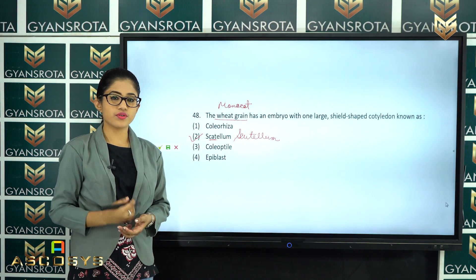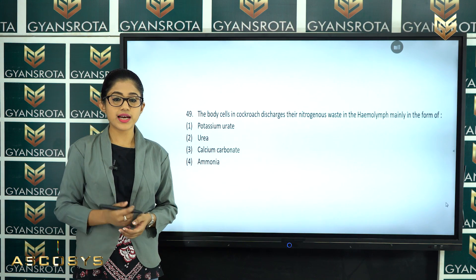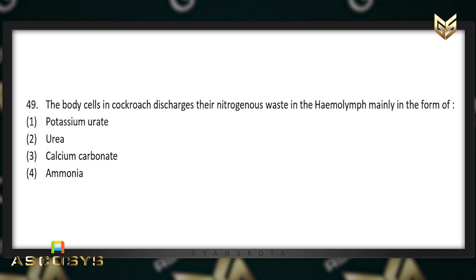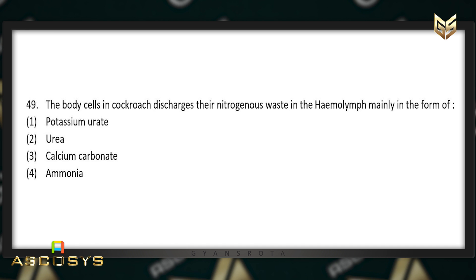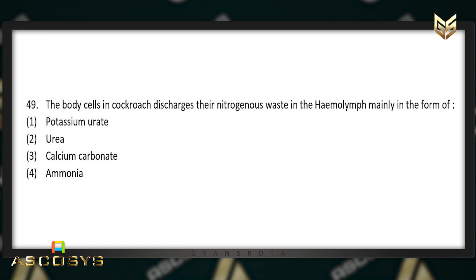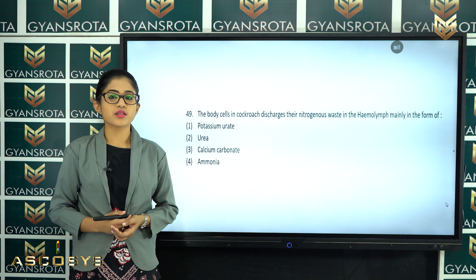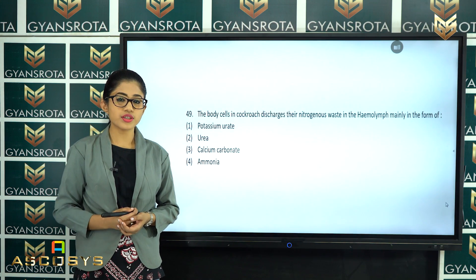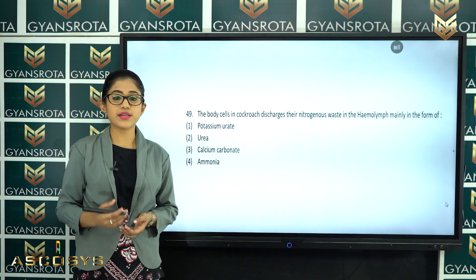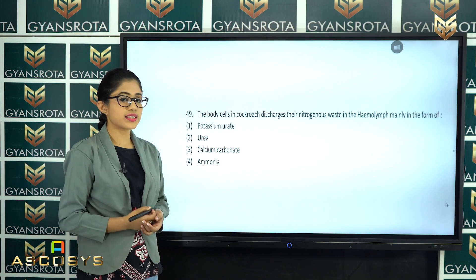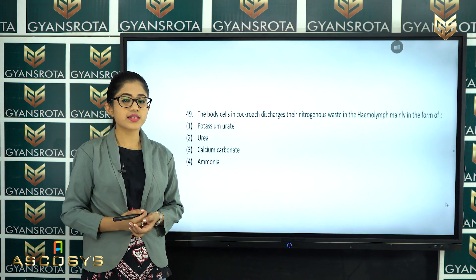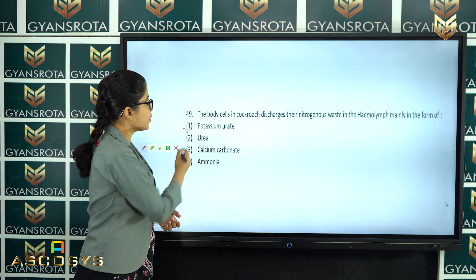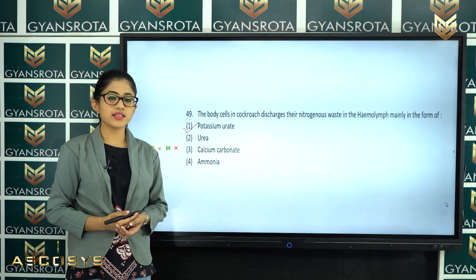The next question is question number 49. The body cells in cockroach discharge their nitrogenous waste in the hemolymph mainly in the form of potassium urate, urea, calcium carbonate, or ammonia? From the chapter Structural Organisation in Animals, covering the excretory system of the cockroach (Periplaneta americana), the correct answer is potassium urate. Option number 1 — potassium urate — is the correct answer.